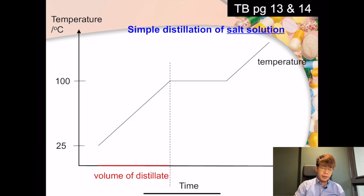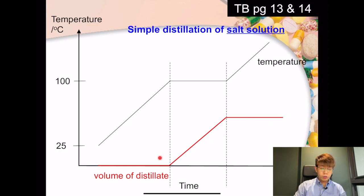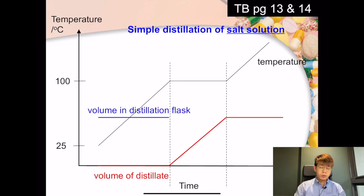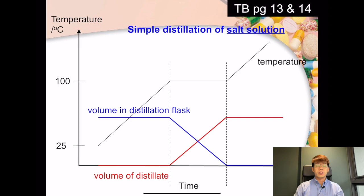At the start there is no distillate. Only when the water starts boiling does the volume of distillate begin increasing. Once the water completely boils off, the volume of distillate in the collecting flask remains constant. Meanwhile, the volume of water in the distillation flask decreases as boiling proceeds, while the amount of salt remains the same — so it becomes more and more concentrated. Finally, after all the water has boiled off, the volume in the distillation flask reaches zero.